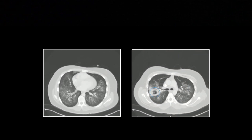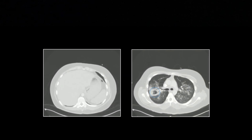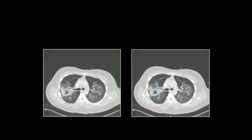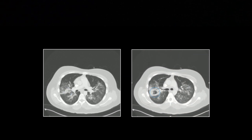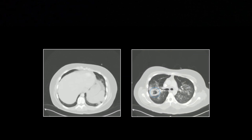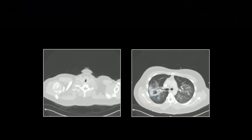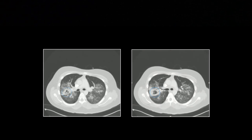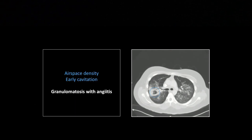I've been forced to change my terminology — it's now granulomatosis with angiitis. By the way, I have some old terminology in here; you're welcome to correct me if a name has changed. I'm trying to update where a new term has really come into common usage. So: granulomatosis with angiitis, and that airspace density you're looking at is blood.